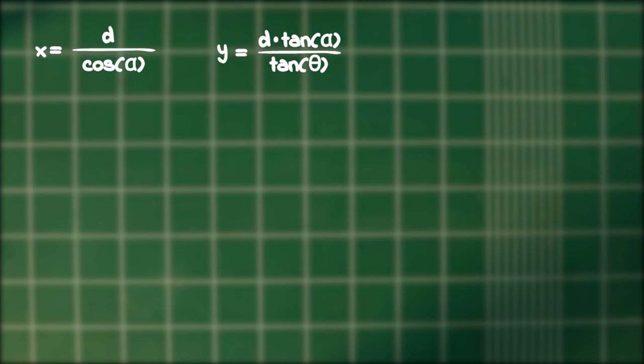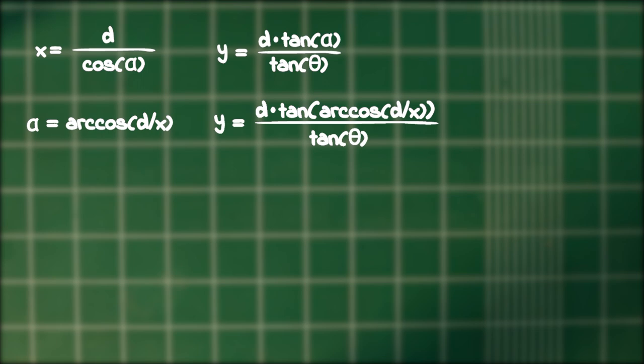Isolating alpha from the expression for x, we get that alpha is equal to the arccosine of d over x. Plugging it back into the expression for y, we get this scary looking expression. But we must remember that when we see an inverse trigonometric function inside a regular trigonometric function, we can sometimes massage the expression so that they will cancel each other.